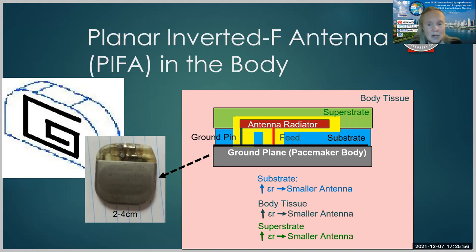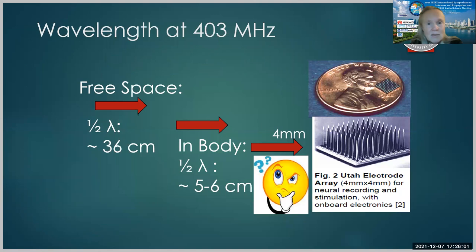But it remains a challenge when you want to stay in the same frequency so that you can have good penetration in the body, but yet you want to drop to a four millimeter size package. In free space, the half wavelength at 433 megahertz is about 36 centimeters. In the body, it's about five to six centimeters. But how can we shrink to get to four millimeters?